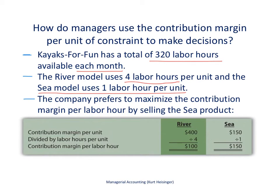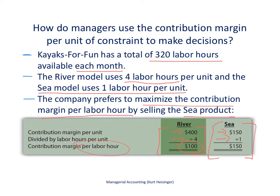The company prefers to maximize the contribution margin per labor hour, and by that measure prefers the sea product. To calculate the contribution margin per labor hour for the river product, we take the $400 contribution margin per unit and divide it by the four labor hours it takes to build one river kayak, which works out to $100 per labor hour. For the sea model, the contribution margin per unit is $150 divided by one labor hour, giving a contribution margin per labor hour of $150.